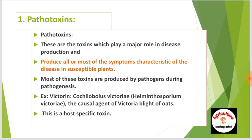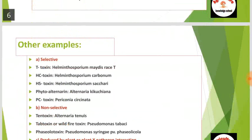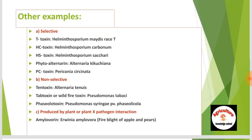Pathotoxins are very important for disease production as they show all symptoms and characteristics of the disease. Examples of pathotoxins include selective and non-selective types. Selective pathotoxins include: T-toxin (Helminthosporium maydis), HC-toxin (Helminthosporium carbonum), HS-toxin (Helminthosporium sacchari), phytoalternarin (Alternaria kikuchiana), and PC-toxin (Periconia circinata).